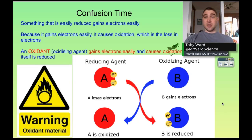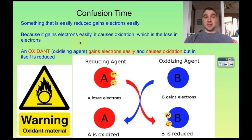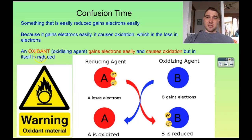One of the hardest parts of redox is getting the terminology correct. We're going to start by looking at an oxidant. If a substance gains electrons easily, that means it causes oxidation, which is the loss of electrons. So something that gains electrons is reduced but it causes oxidation. Because it's causing oxidation, it's called an oxidant, which is a portmanteau of 'oxidizing agent'.